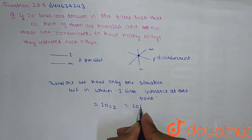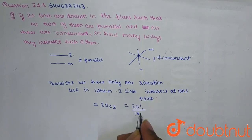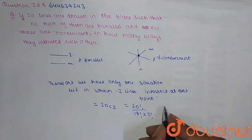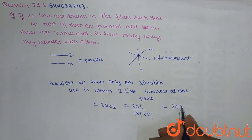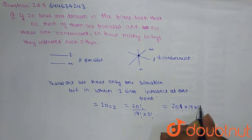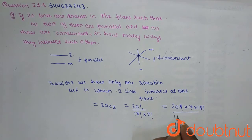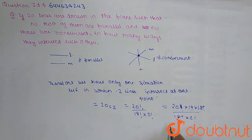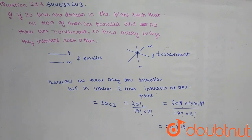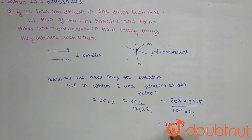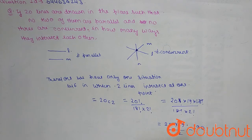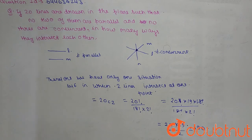20C2 equals 20 factorial divided by 18 factorial into 2 factorial. This simplifies to 20 into 19 into 18 factorial divided by 18 factorial into 2 factorial. The 18 factorials cancel out, giving us 20 into 19 divided by 2, which equals 380 divided by 2. So our answer is 190. There are 190 points at which the 20 lines intersect each other.